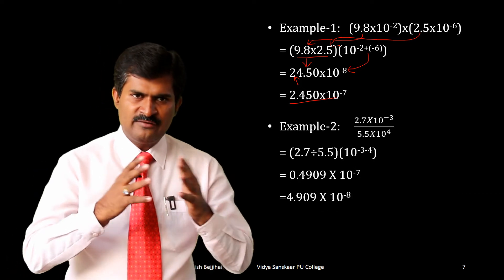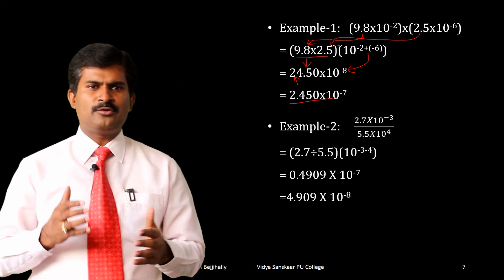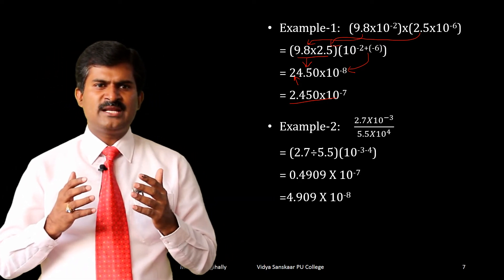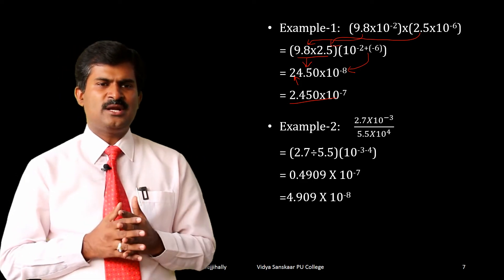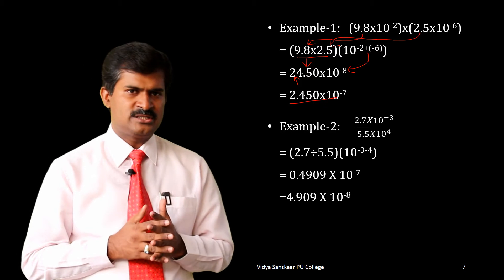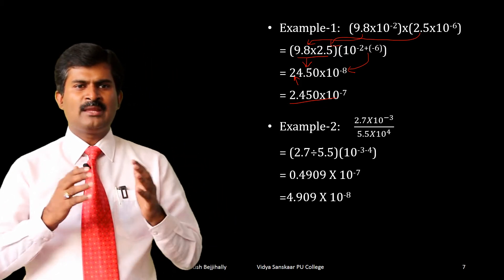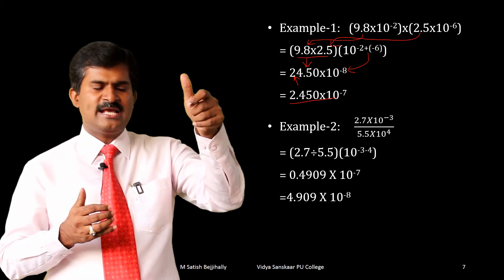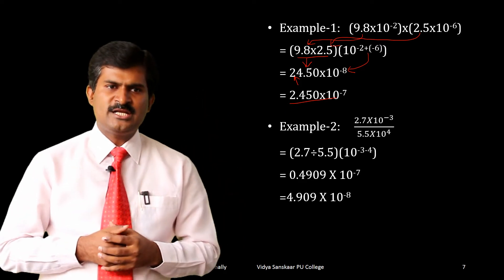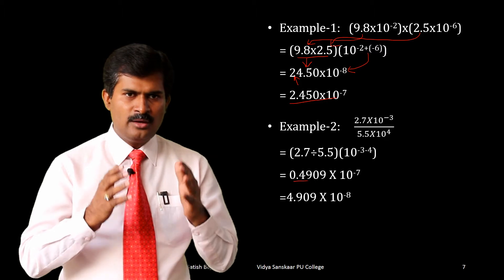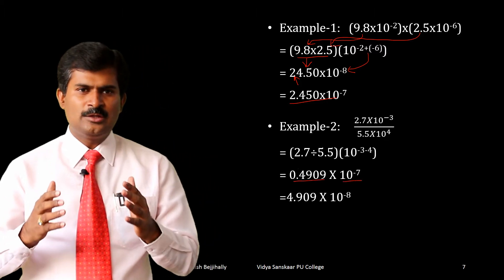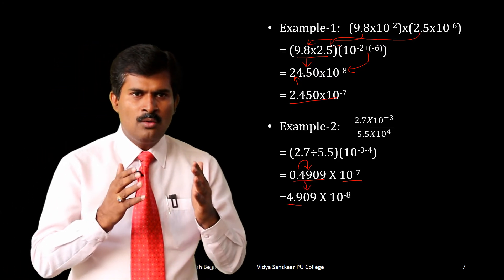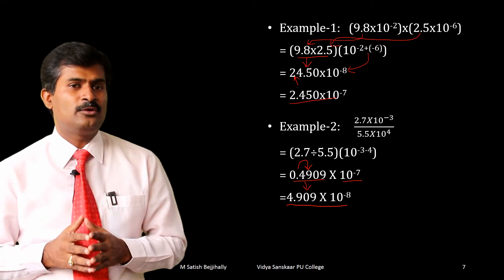Let us take one more example for division: 2.7 into 10 to the power of minus 3 divided by 5.5 into 10 to the power of minus 4. Taking exponents on one side and coefficients on the other: 2.7 divided by 5.5 into 10 to the power of minus 3 minus minus 4, because the numerator exponent is subtracted by the denominator exponent. The value is 0.4909 into 10 to the power of minus 7. Converting to scientific notation, it becomes 4.909 into 10 to the power of minus 8.